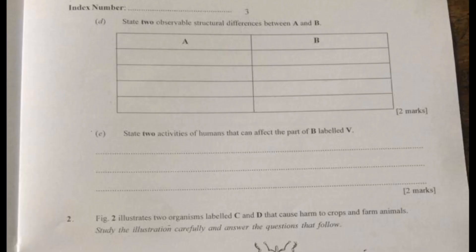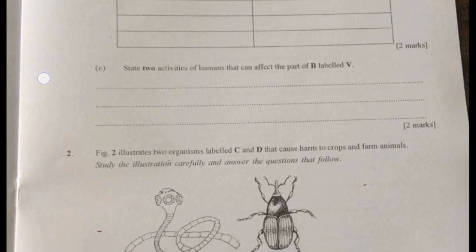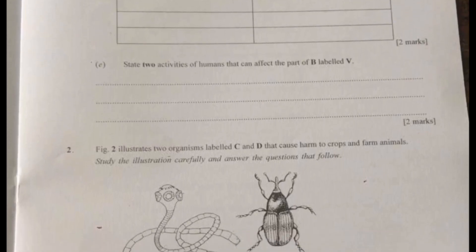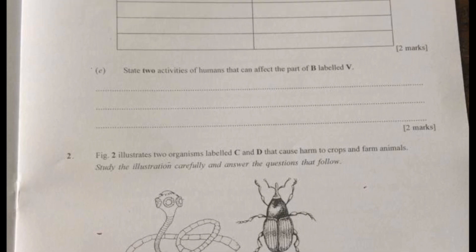On the second page you were expected to state two observable features and these observable features you can see them. The way the enamel is and then the way the roots are. Then state two activities of humans that affect the part labeled B, the vein.